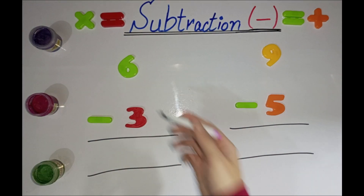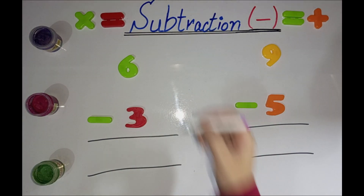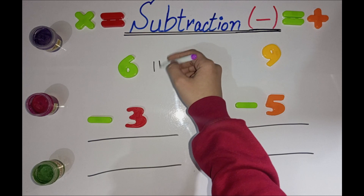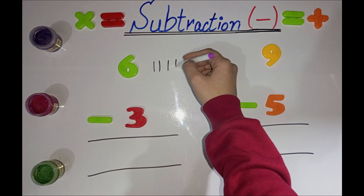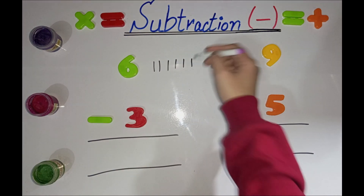What is this number? 6. Make 6 lines here. 1, 2, 3, 4, 5, 6.